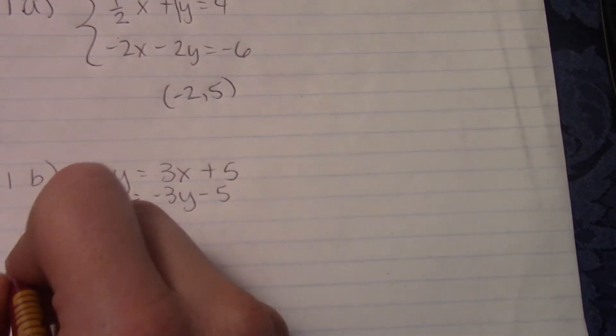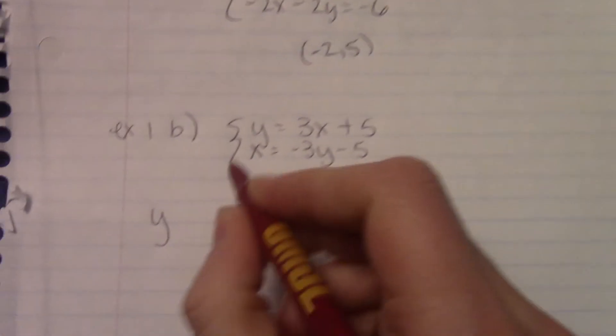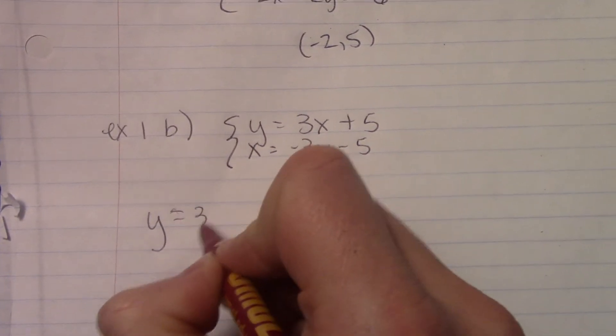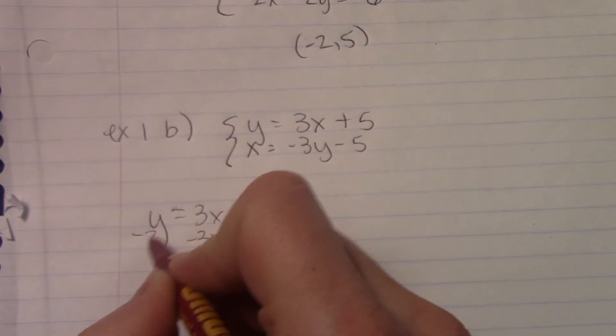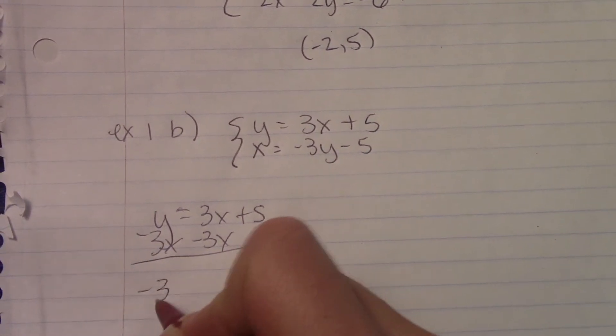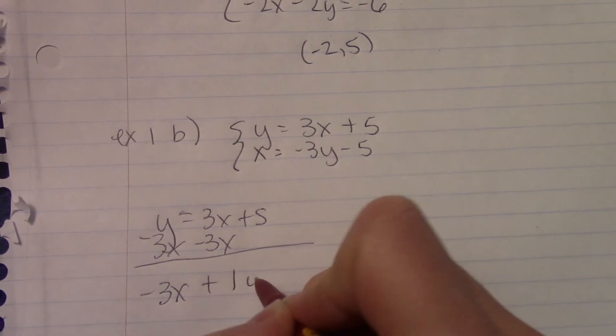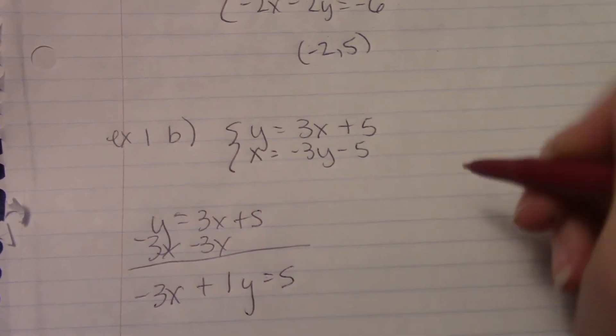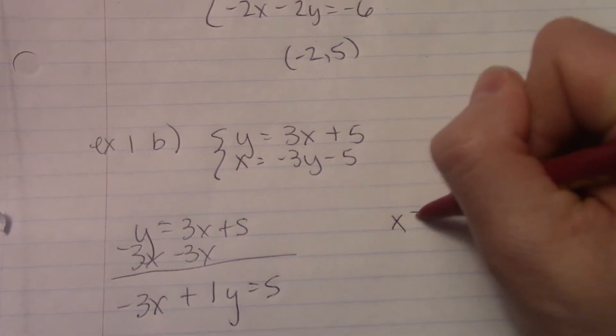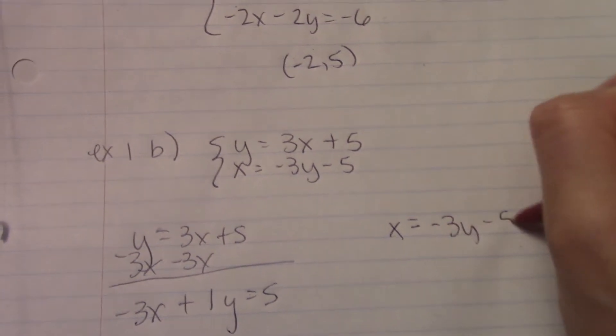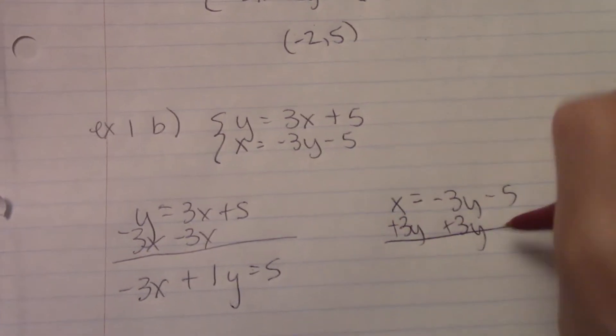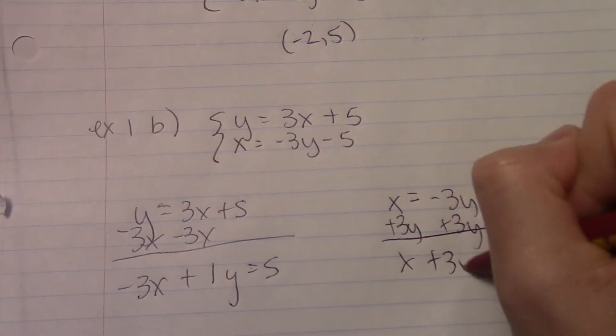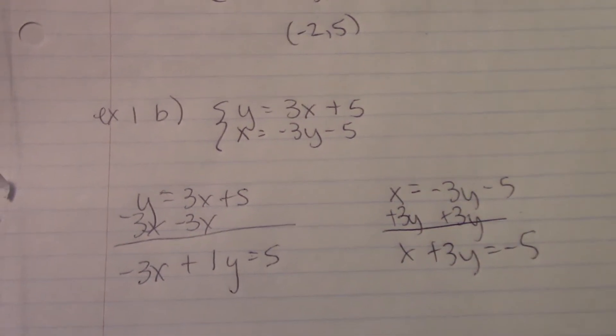Y equals 3X plus 5. We need to move the X to the other side by subtracting. So we have negative 3X plus 1Y equals 5. And the other one, X equals negative 3Y minus 5. And move our Y to the other side. So on these, we want them to be X and Y on the same side. Just like elimination.